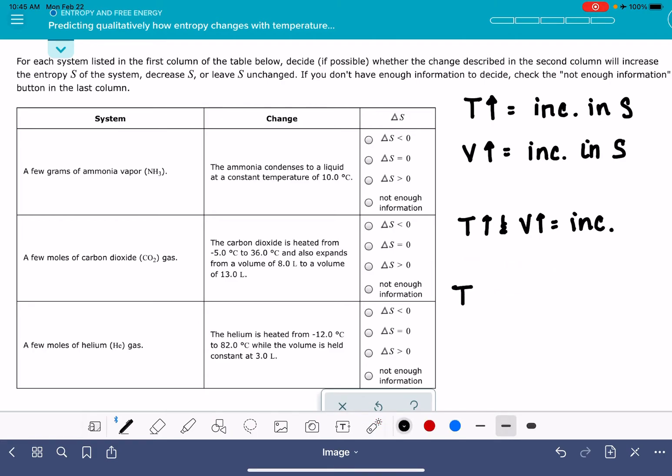But if you have a mismatch, so like if temperature goes up and the volume goes down, or vice versa, if temperature goes down and the volume goes up, then we don't know exactly what the entropy would be for that. And that's why you have this option for some of these: not enough information.